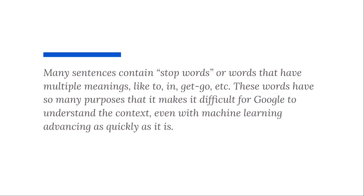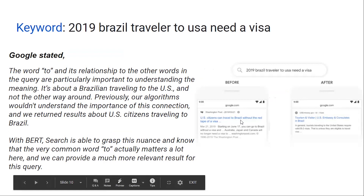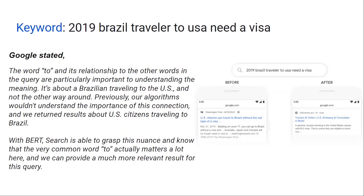In a sentence there are many stop words: 'to,' 'in,' 'by' — they carry many meanings. Google will determine the meaning of these words. The word 'to' and its relationship to the other words in the query are particularly important to understanding the meaning.